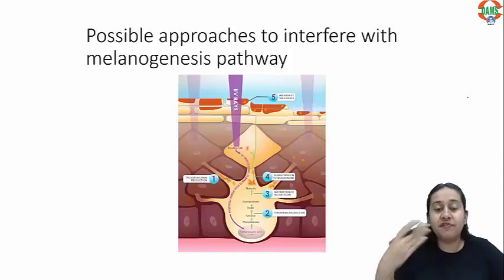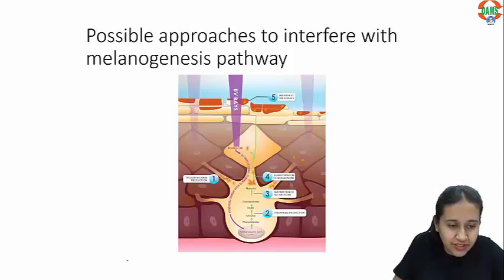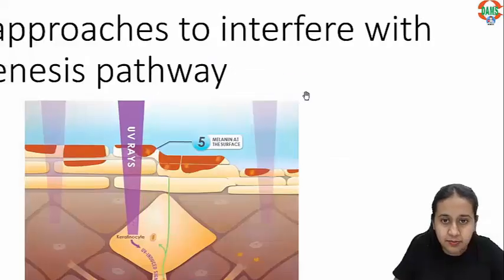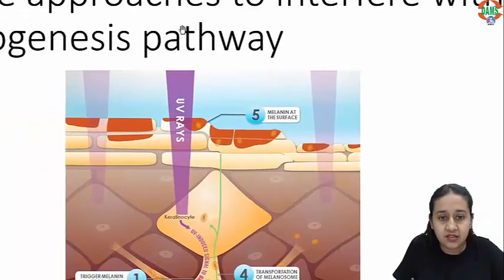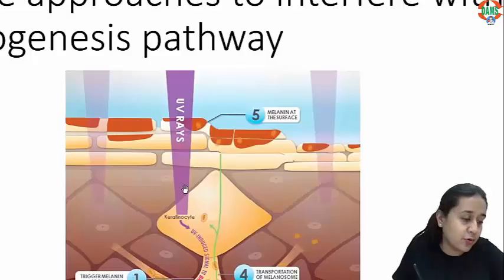Now what is the possible mechanism of interference? That's what we have already discussed, but let us understand it a little bit more in detail. The first thing which stimulates melanin production is UV rays.